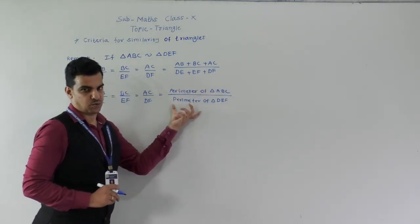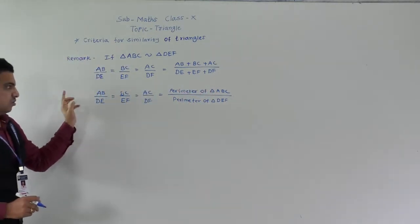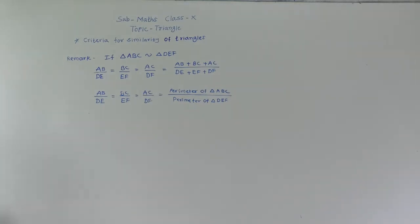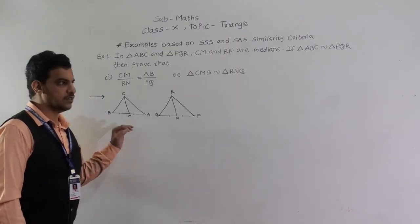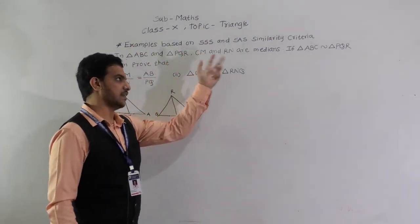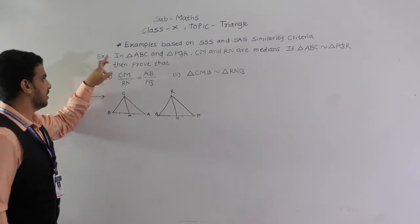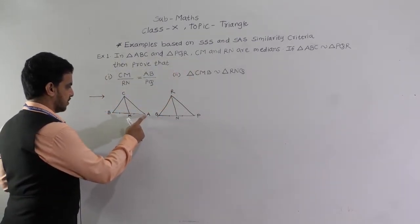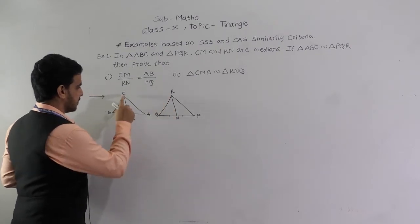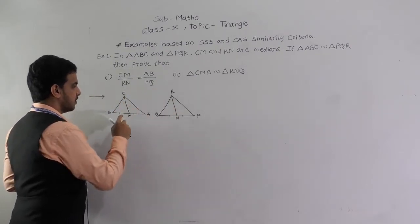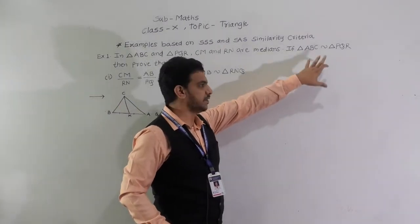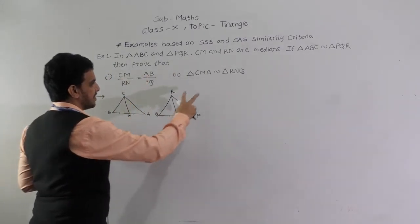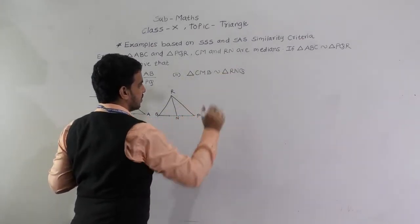They can ask examples on perimeters of triangles too, so keep this remark in mind. Now we will solve examples based on SSS and SAS Similarity Criteria. First example: in triangles ABC and PQR, CM and RN are medians. Triangle ABC is similar to triangle PQR is given. We have to show that CM upon RN equals AB upon PQ, and that triangle CMB is similar to triangle RNQ.